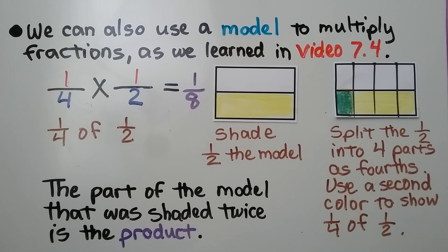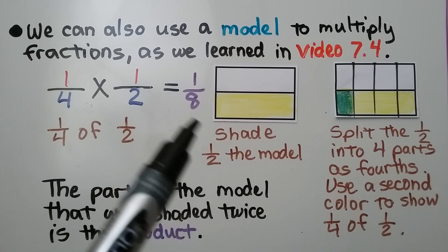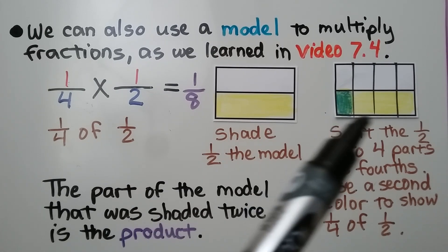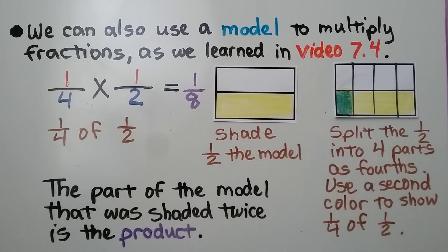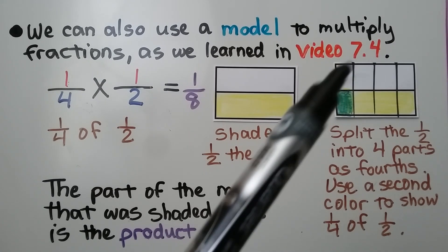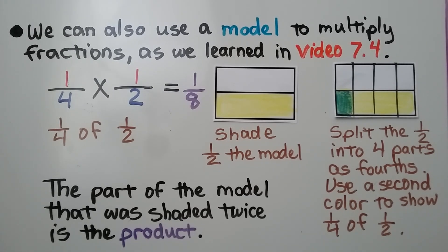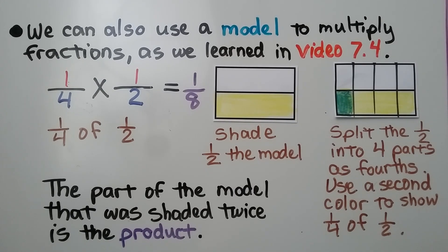We can also use a model to multiply fractions, as we learned in video 7.4, linked in the description if you missed it. We have 1 fourth times 1 half, and it's equal to 1 eighth. We're looking for 1 fourth of 1 half. We shade in half the model in yellow. Then we split that 1 half into 4 parts as fourths, splitting the entire model into fourths. We use a second color to show 1 fourth of the yellow part. The part of the model shaded twice is the product — it's 1 eighth of the entire model.